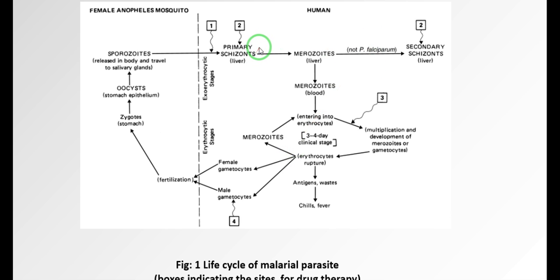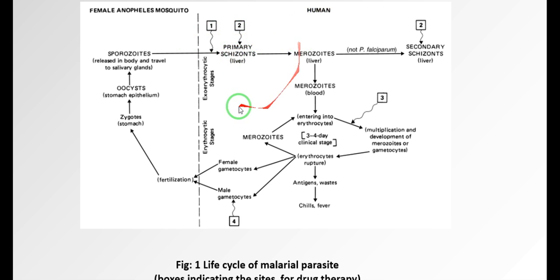The boxes shown in the diagram indicate the target sites for anti-malarial drugs. Upon injection into the patient's blood, within a few minutes these sporozoites convert into primary schizonts. They enter the blood and go to hepatocytes. The liver cells convert into primary schizonts, and from the primary schizonts in the liver, they convert into merozoites.